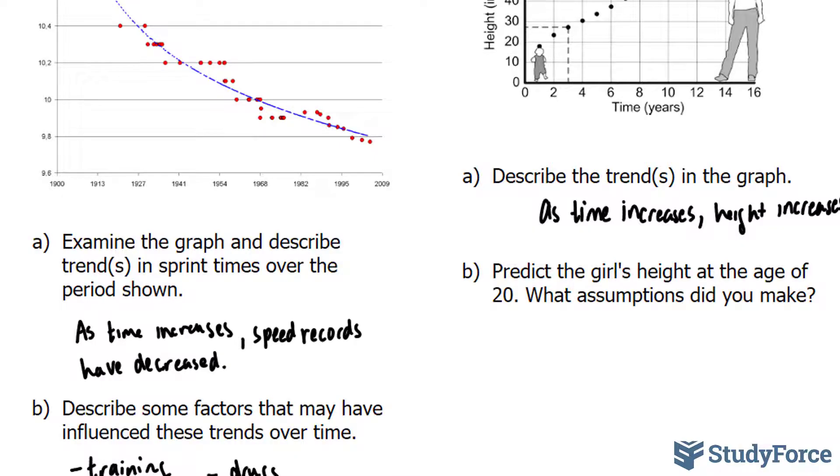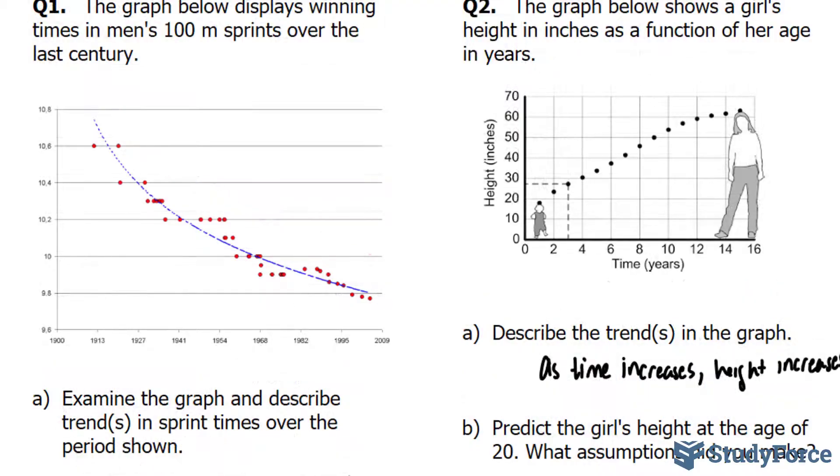It asks us to predict the girl's height at the age of 20. What assumptions did you make? To answer this question, I will put a line of best fit that will approximate these points. And if we use this line of best fit, it tells us that at the age of 20, she will continue to grow in a continuous fashion. But as mentioned earlier, height has a limit. And so this is probably not the best way to approximate the height as age continues beyond 16.